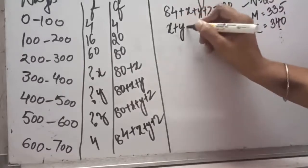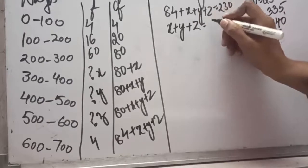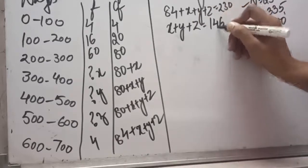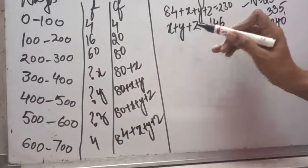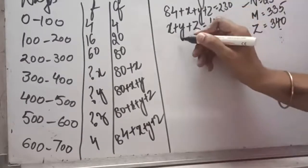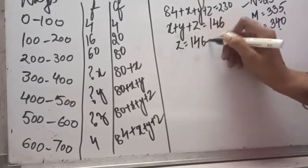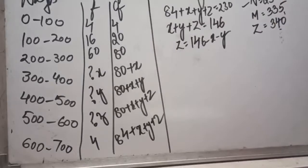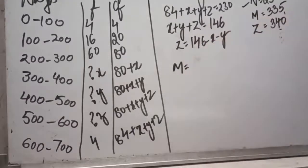From here we get our first equation: x plus y plus z equals 230 minus 84, that is 146. From this equation I can express any variable — for example, z equals 146 minus x minus y. Similarly x and y can be expressed. This is how we make use of our first information.